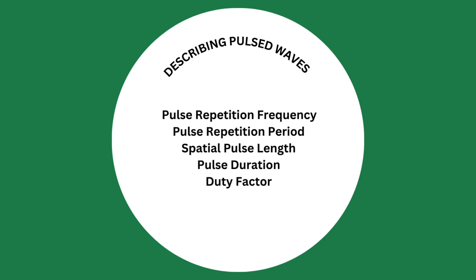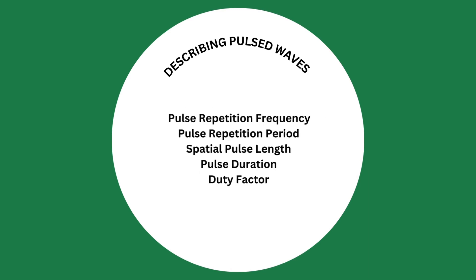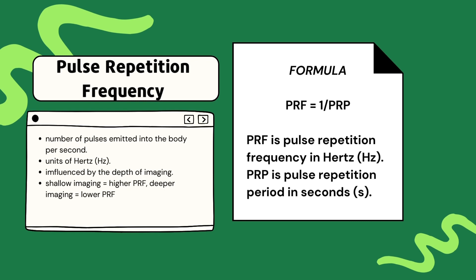There are a few different parameters we use to describe pulsed waves. Let's get into the concept of pulse repetition frequency, or PRF. PRF is a fundamental parameter in pulsed wave ultrasound, referring to the rate at which ultrasound pulses are emitted, typically measured in units of hertz. Think of PRF as the heart of the ultrasound system, determining how frequently the ultrasound transducer emits pulses into the body.